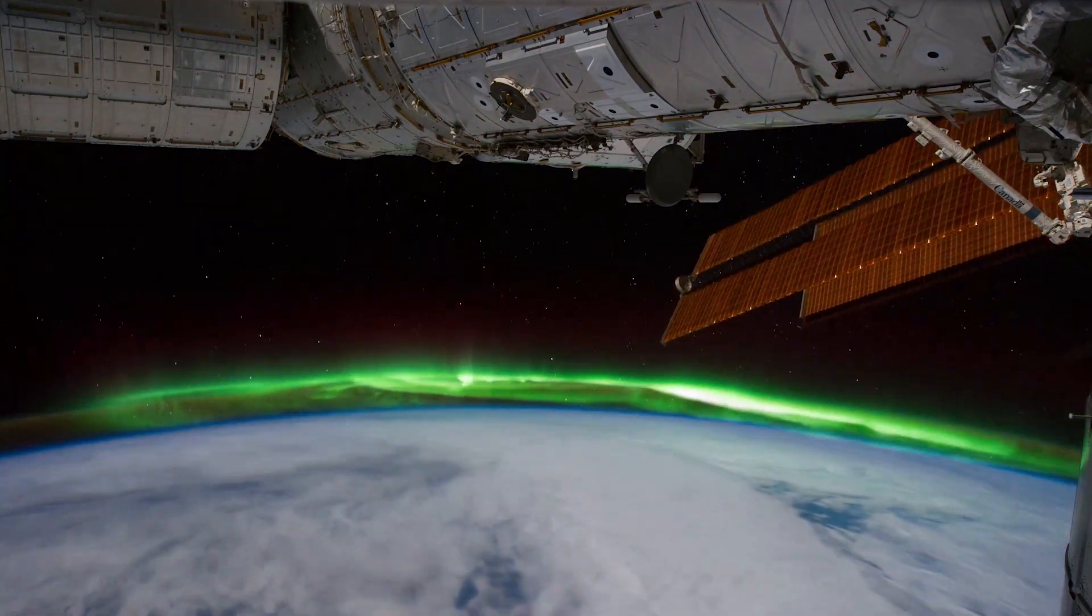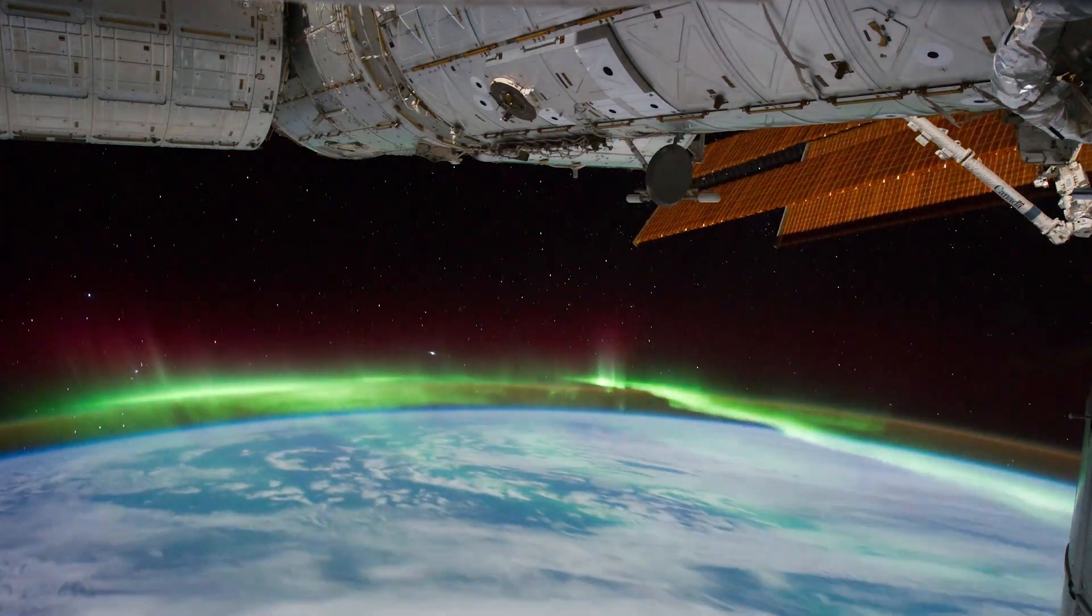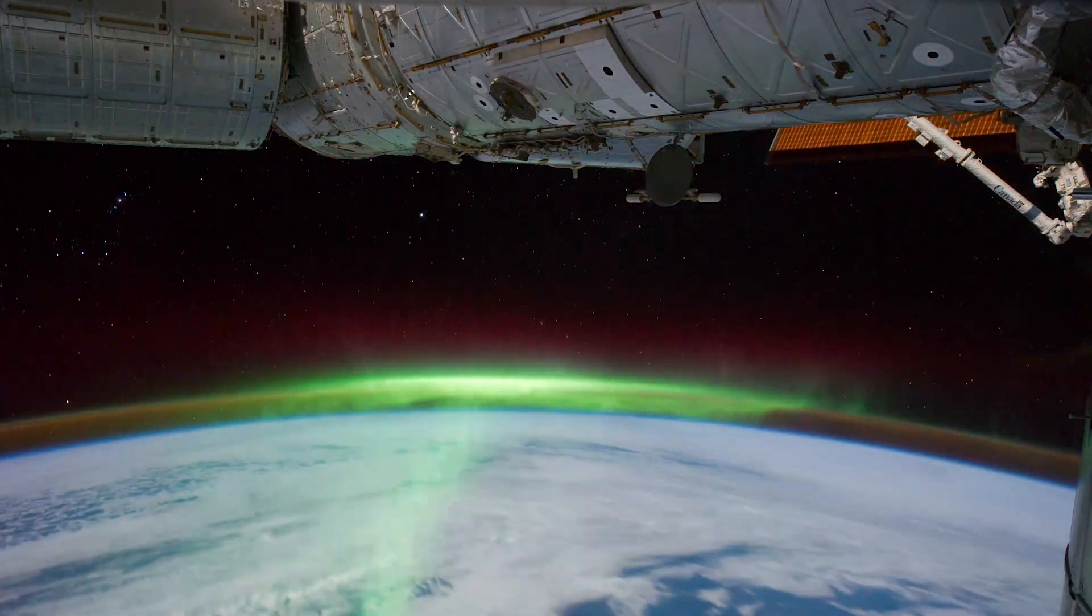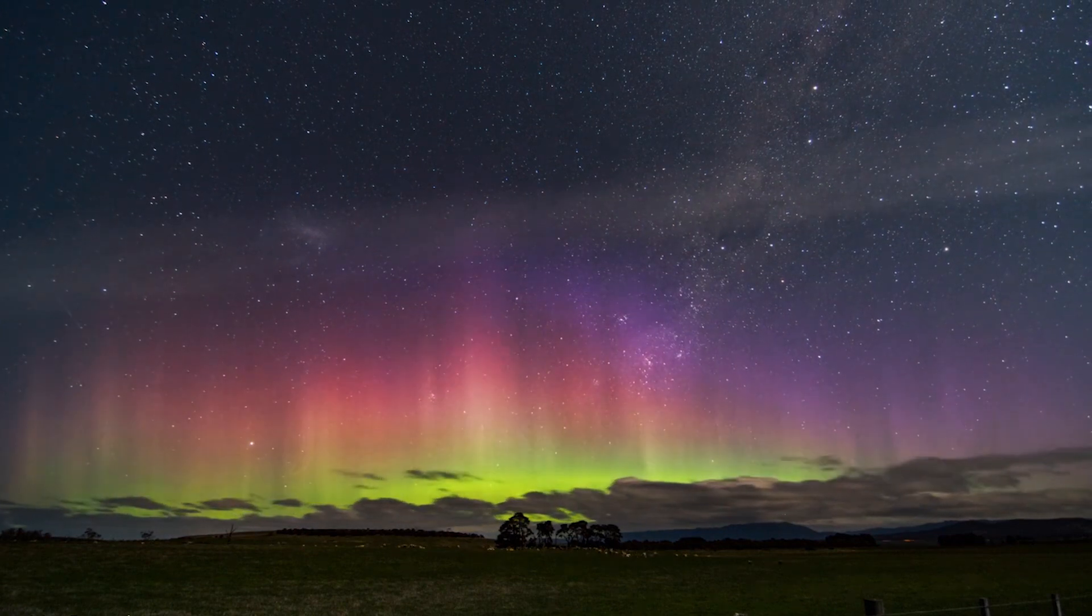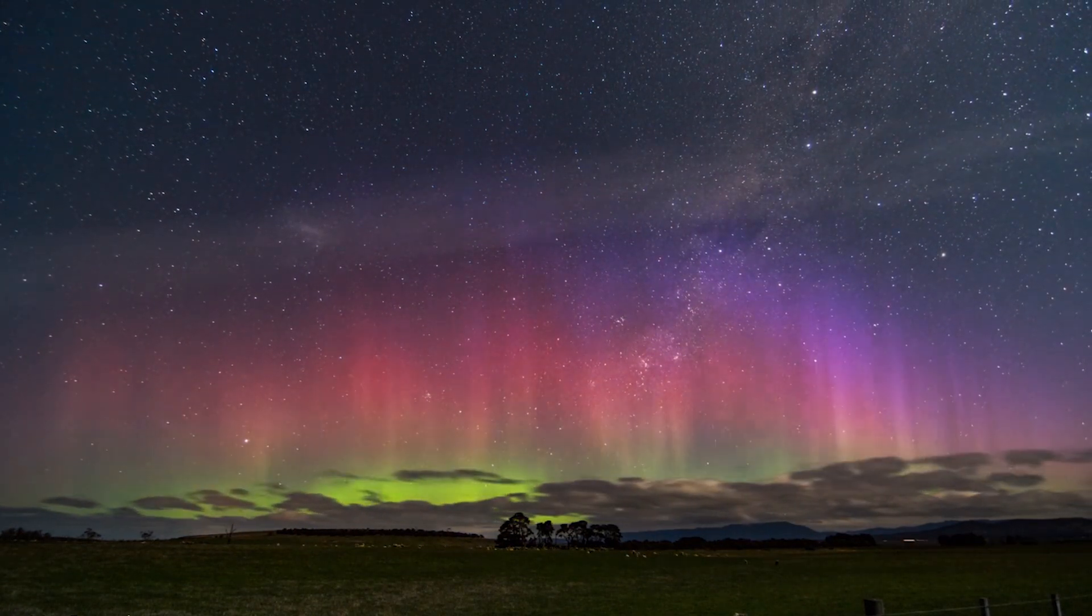Which colour is emitted depends on how energetic the collisions are and where they occur in the atmosphere. Oxygen releases greenish-yellow or red light, nitrogen dark red or blue light. And then these colours can mix so that we see purples, pinks and white light, and that's what makes these beautiful lights.